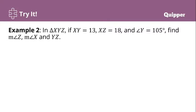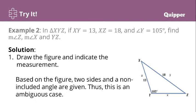For the second example, in triangle XYZ, if XY is 13, XZ is 18, and angle Y is 105 degrees, find the measures of angles Z and X and the side YZ. Just like the previous example, you need to draw the figure and indicate the measurements. Take note again that the naming of the sides are based from its angles, opposite: X to x, Y to y, and Z to z.